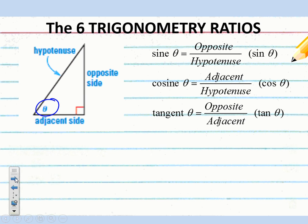These are the three basic ones that you already know. Sine of theta, which is the angle, is opposite over hypotenuse. Cosine of theta is adjacent over hypotenuse. And tangent of theta is opposite over adjacent. You'll see the abbreviations over there on the right-hand side. These are the three that you're already familiar with.